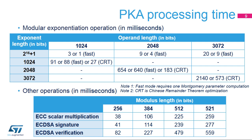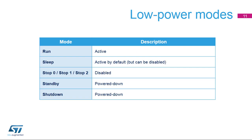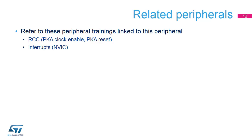Here is a summary of the PKA events able to trigger an interrupt in the Nested Vectored Interrupt Controller (NVIC): PKA computation completed, PKA RAM access error, and access to unmapped address error. The Direct Memory Access (DMA) controller cannot be used with the PKA. Here is an overview of the status of the PKA peripheral in each of the low-power modes; PKA operations are not possible when the device is in stop mode.